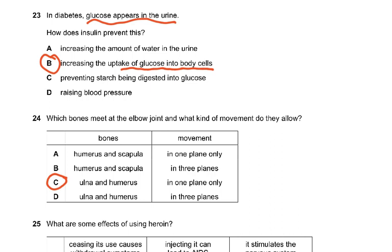The glucose is taken out of the blood and stored in the liver as glycogen. But in diabetic people, insulin is not produced, so the glucose is very high in the blood. It's not used by body cells and not converted to glycogen, so there's too much glucose in the blood. That results in glucose being filtered out but unable to be reabsorbed, which is why it appears in the urine.